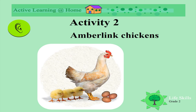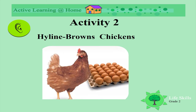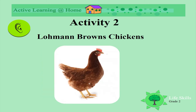Today we're focusing on chickens. There are many kinds and breeds of chickens - all sorts. Amber Link is one breed of chicken. Highland Browns is another - can you see a difference between the two? Look at their colors and how they change. Loam and Brown is also a little different.